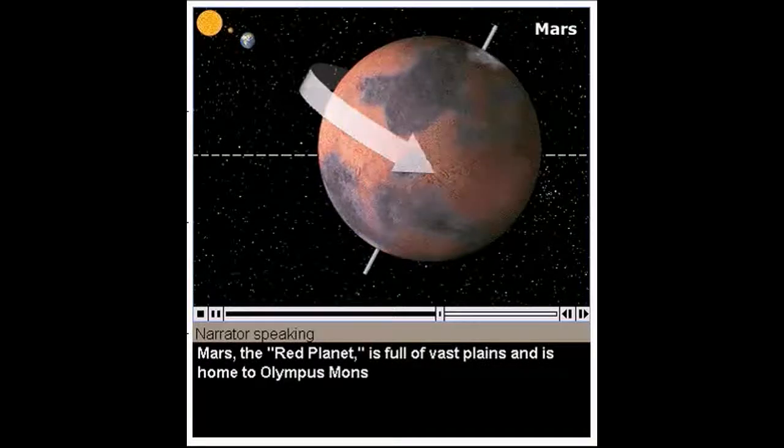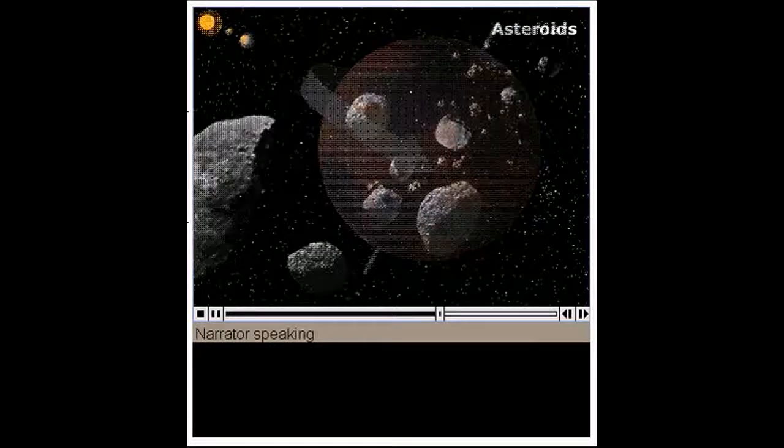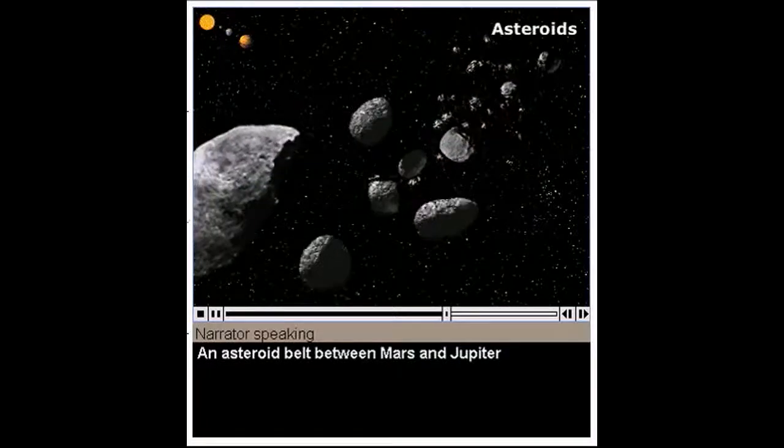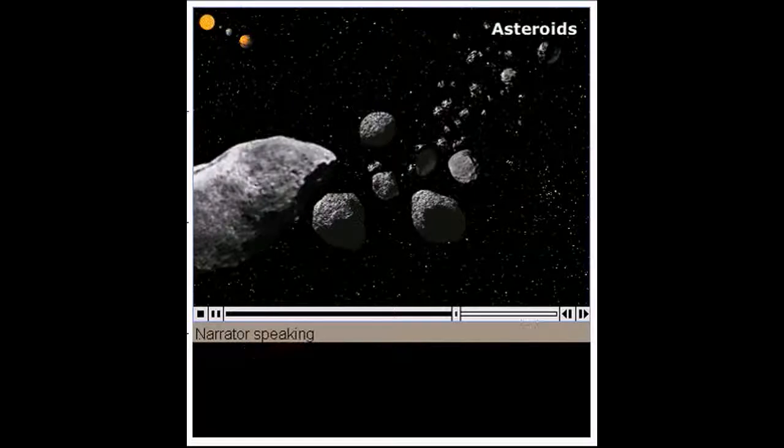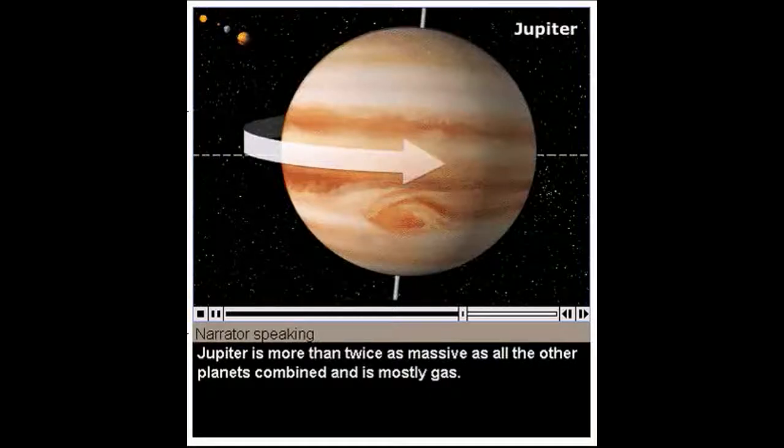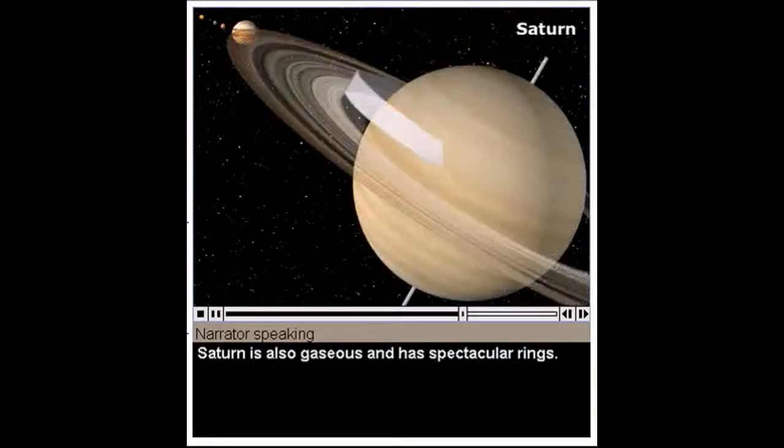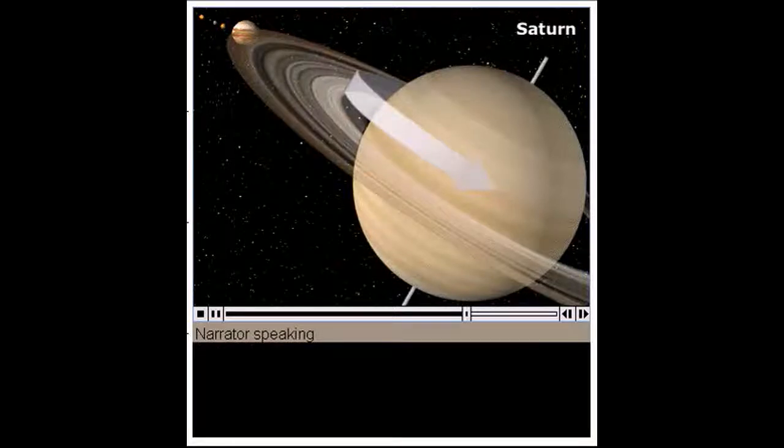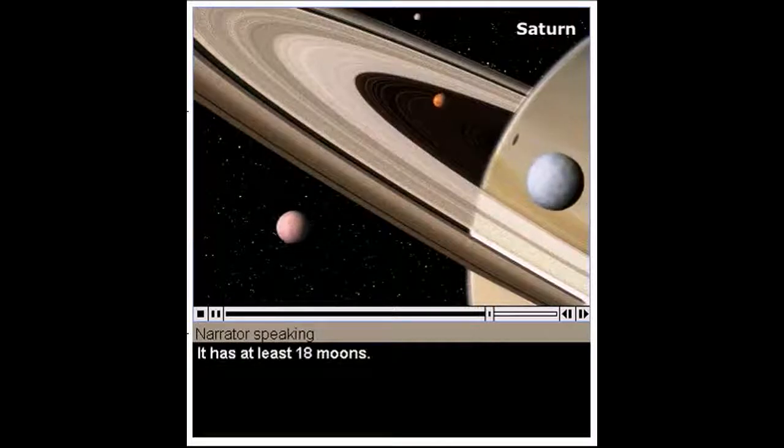Mars, the red planet, is full of vast plains and is home to Olympus Mons, the largest volcano in the solar system. An asteroid belt between Mars and Jupiter forms the boundary between the inner and outer solar system. Jupiter is more than twice as massive as all the other planets combined and is mostly gas. Saturn is also gaseous and has spectacular rings. It has at least 18 moons.